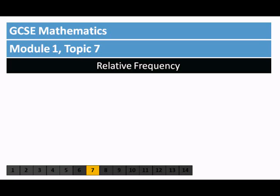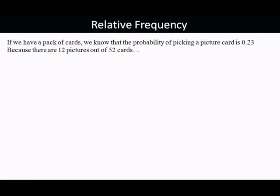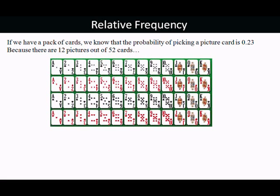The next topic on GCSE is called relative frequency. If you've got a pack of cards, you know that you've got a 0.23 chance of picking a picture because there are 12 pictures out of the 52 cards.